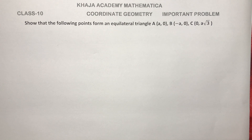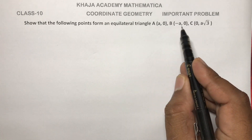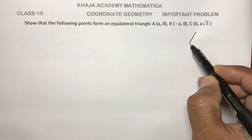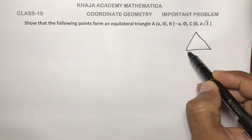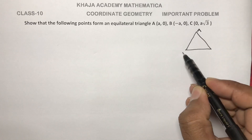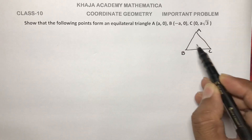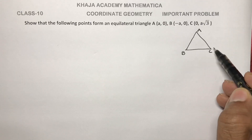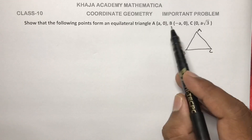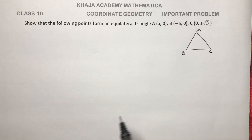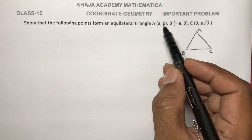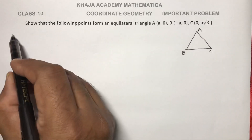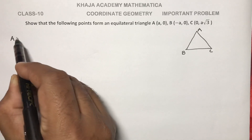Show that the following points form an equilateral triangle. Here they give three vertices A, B, and C. Find the distances AB, BC, and AC — if all three distances are equal, then we can say that ABC forms an equilateral triangle.